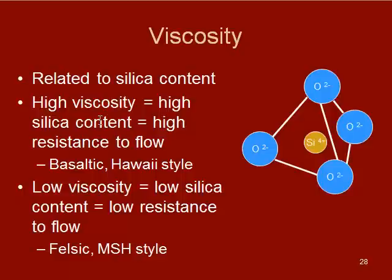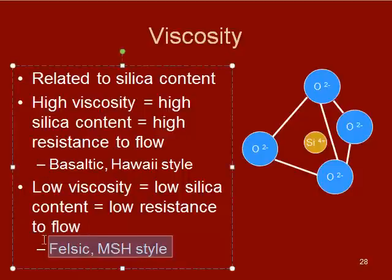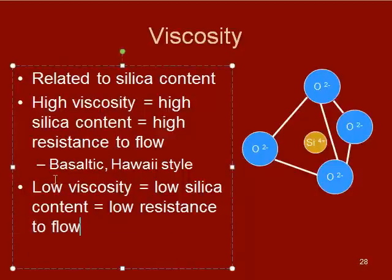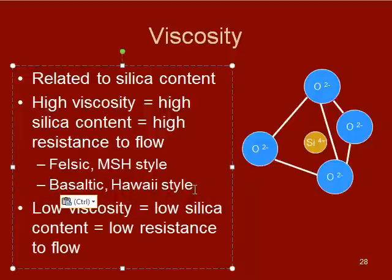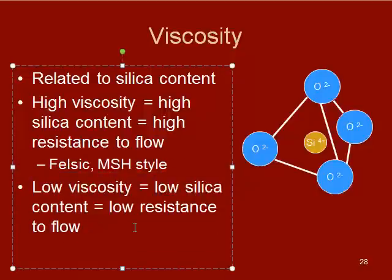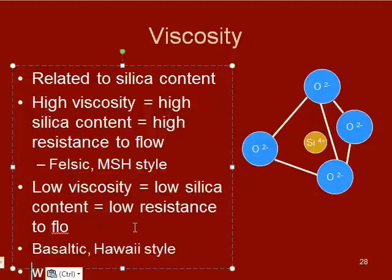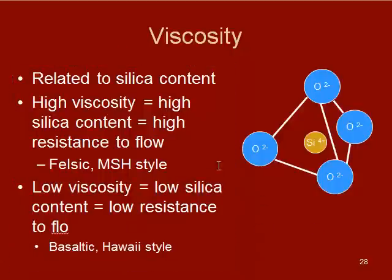High viscosity would be Mount St. Helens style, and low viscosity would be basaltic or Hawaii style — more effusive. Why does silica matter? The silicon and oxygen tetrahedron — each of the corners has a negative charge, so it wants to bond with the other elements in the magma.